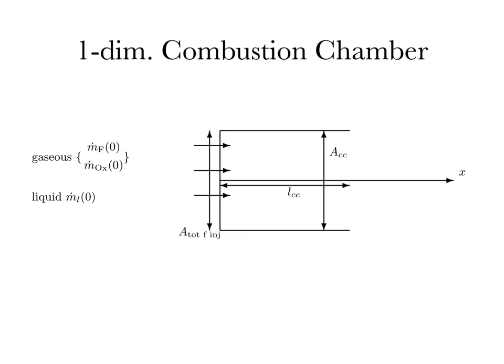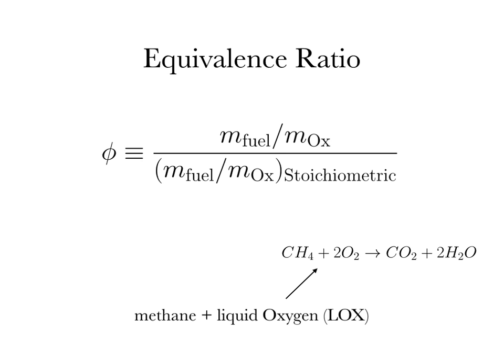What we'll be considering is an idealized combustion chamber, idealized in one dimension — namely the x-axis along the axis of the combustion chamber represented by x. x equals zero will start at the injection plate where gas and liquid, the fuel and the oxidizer, are injected in.